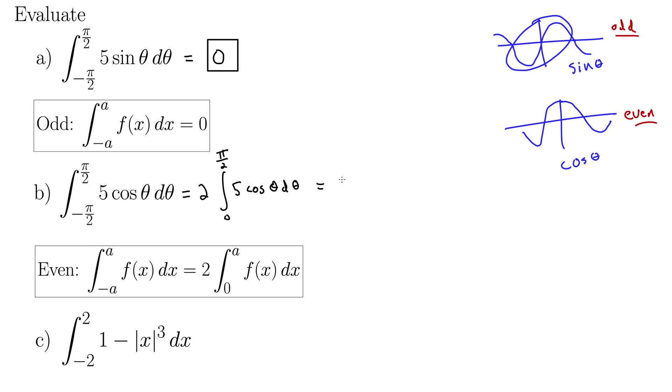It just simplifies evaluating the integral. The integral of cosine is sine. Two times five is ten. So this becomes ten sine theta evaluated from zero to pi over two. That's ten times, sine of pi over two is one minus sine of zero is zero. So we simply get ten.